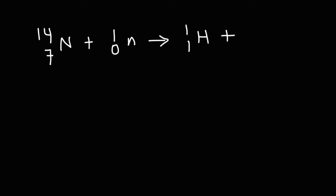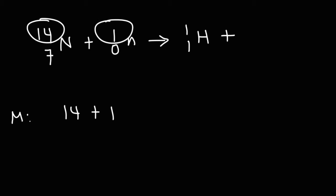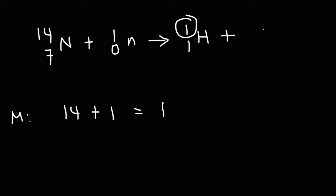Let's write an equation starting with the mass numbers. On the left side we have 14 plus 1, and that equals on the right side 1 plus some number — let's call it M for mass number.